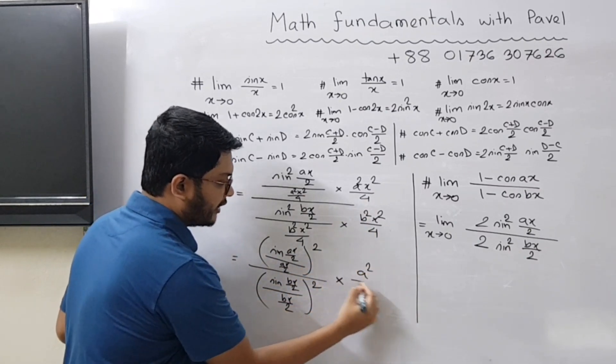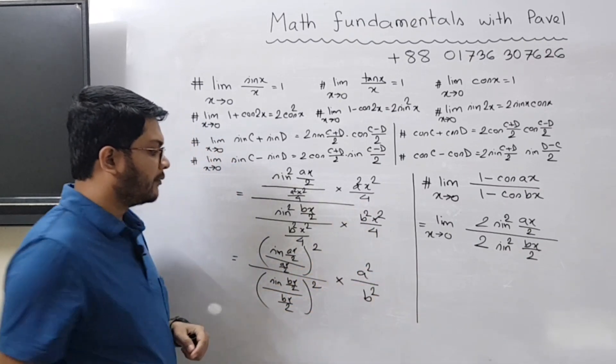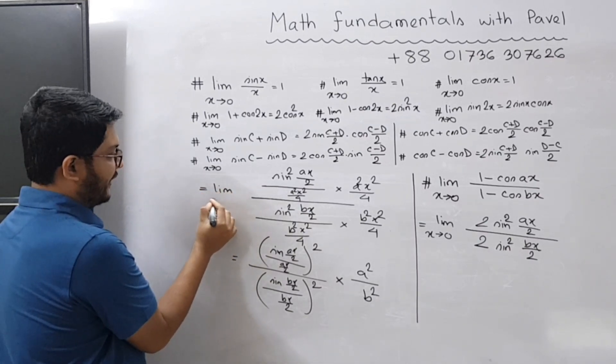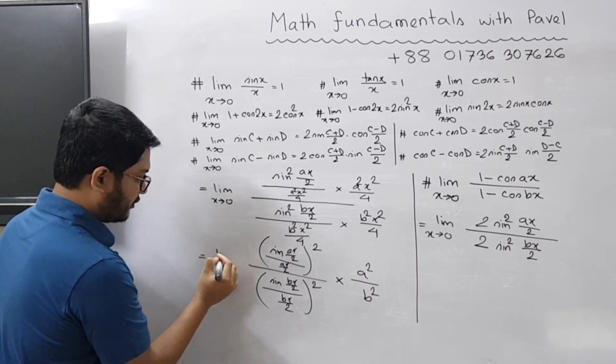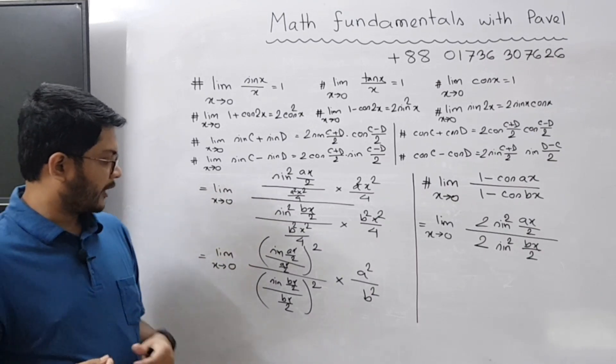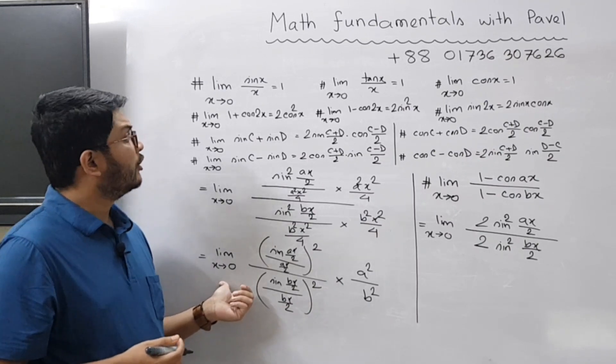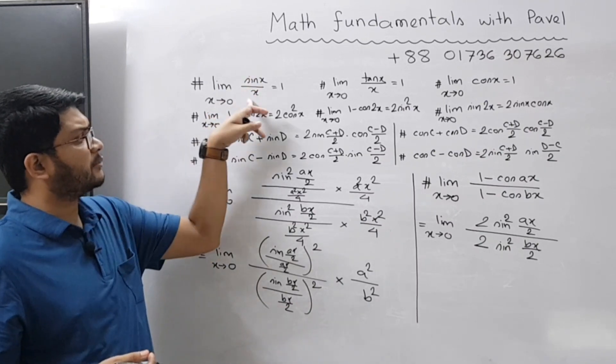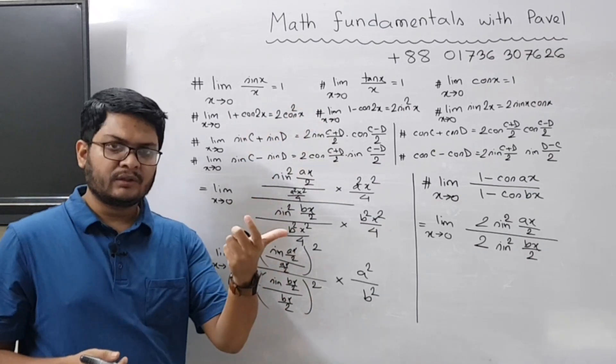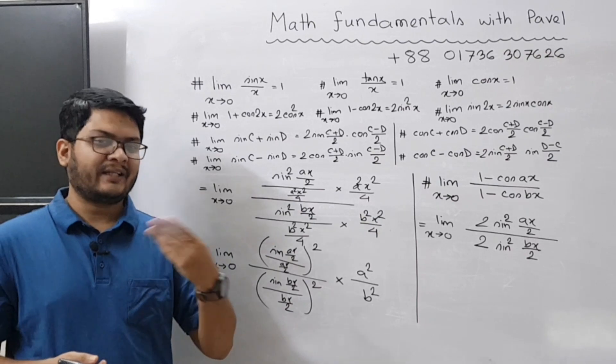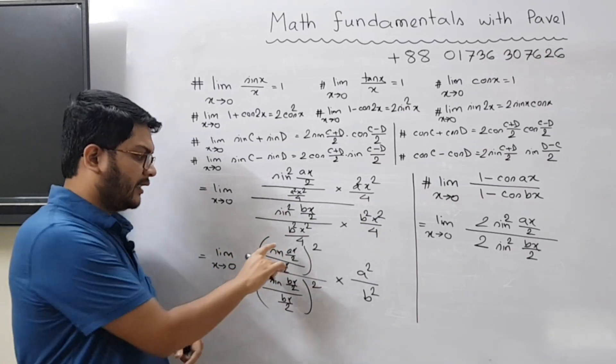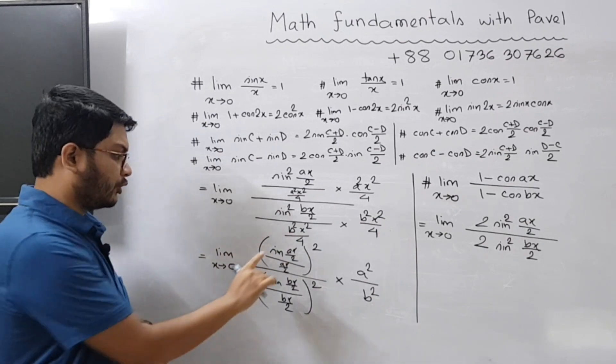Sorry one thing I just forgot to write: limit x tends to 0, you must write this otherwise there is no meaning. So now we apply the limit. We know that limit x tends to 0 of sin x / x equals to 1. So this part, if x is 0 then ax/2 is also 0. So you write it as theta. So sin θ / θ when theta tends to 0 this value becomes 1.